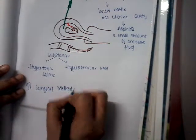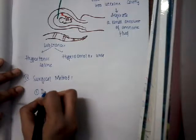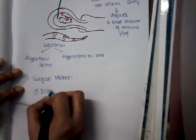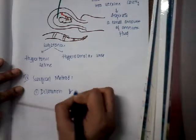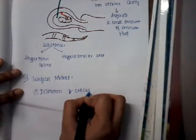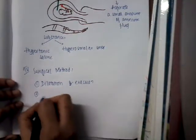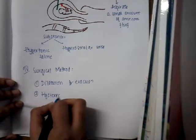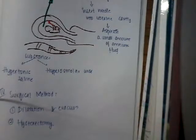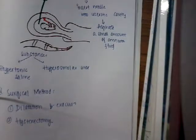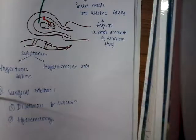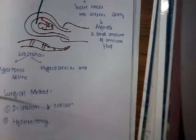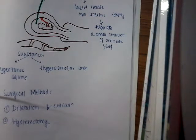The surgical methods available include dilatation and evacuation of the cervix, and hysterectomy. These are the different methods used for second trimester abortion. Thank you for watching — if you have any doubts or feel something is inadequate, please comment in the comment section.